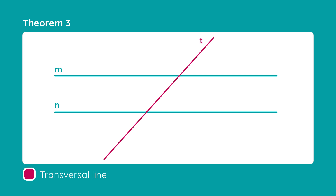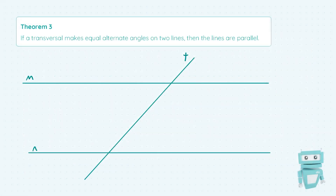The second question you might ask is what alternate angles are. When a transversal crosses two lines, the angles on opposite sides of the transversal at each of the two lines are called alternate angles. In our case, we could take this angle here and imagine this was 140 degrees, and imagine we took this angle up here and knew this was 140 degrees as well. Then we could say these are alternate angles.